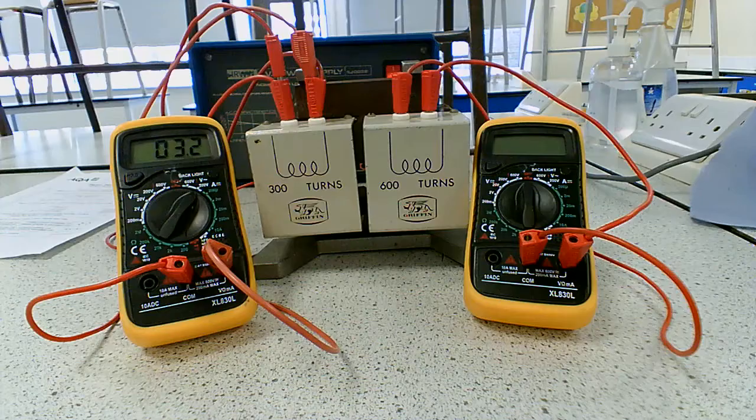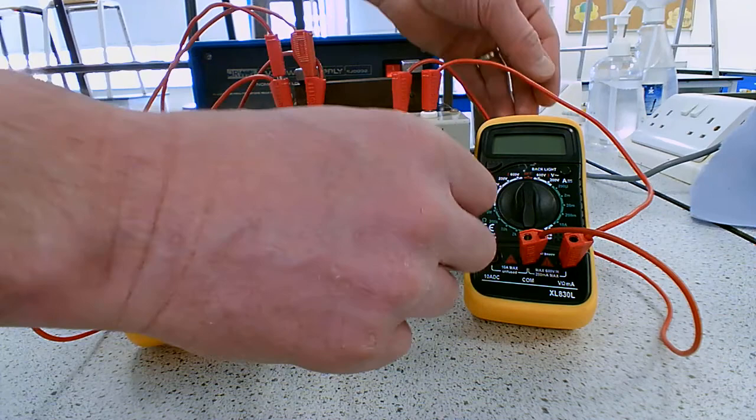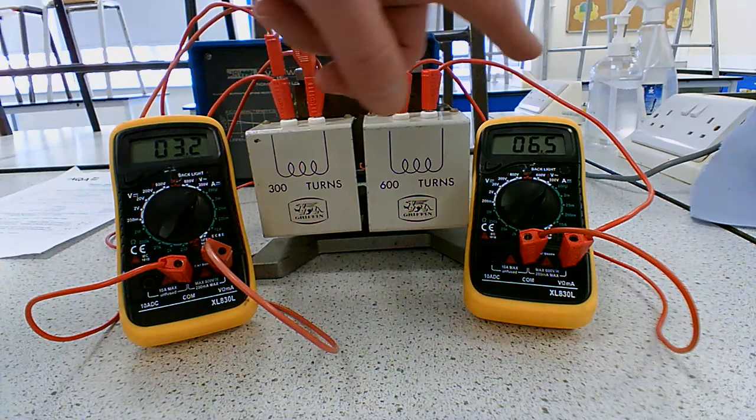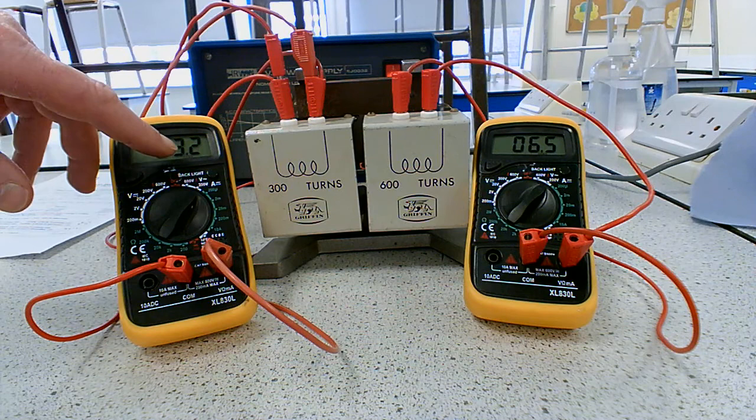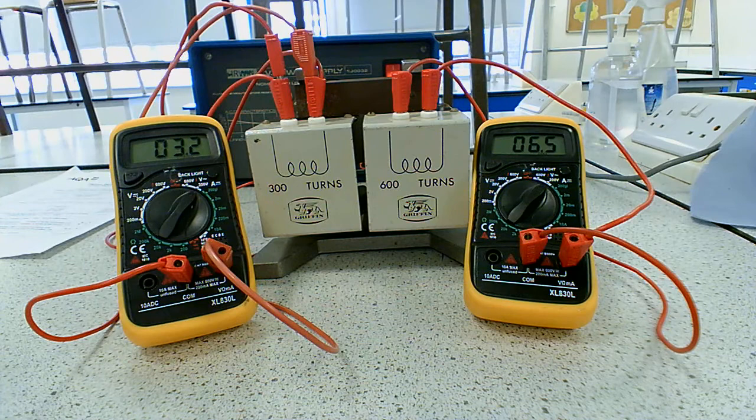Right, next thing we need to do is go and check that on the multimeter. So here we are back at the beginning, here's our 3.2 volts and we predicted 6.4 on the secondary, so if I switch this on... there we go it says 6.5. And the reason for that is because this could be for example 3.24 and if you double 3.24 that's going to be 6.48 which rounds to 6.5. So we've got a margin of error in our measurements here but you can see we did a pretty good job.